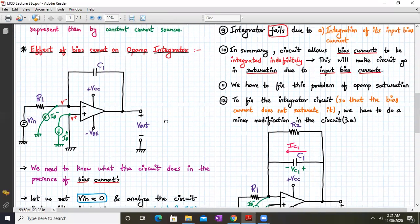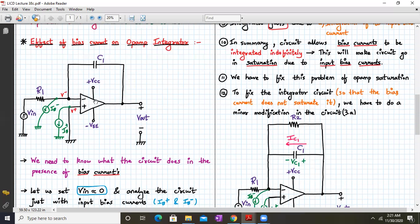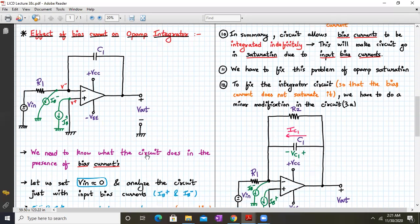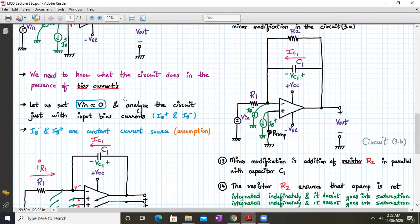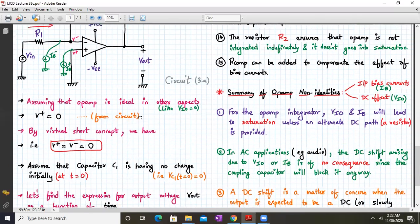Next, the effect of bias current on the op-amp integrator. Here is my plain looking op-amp integrator, but especially my bias currents ib+ and ib- are marked over here. We need to know what the circuit does in absence of a bias current. Let's say that if we set vin equal to zero and analyze the circuit just with the input bias current, that is ib+ and ib-. They are constant values, that's the assumption.